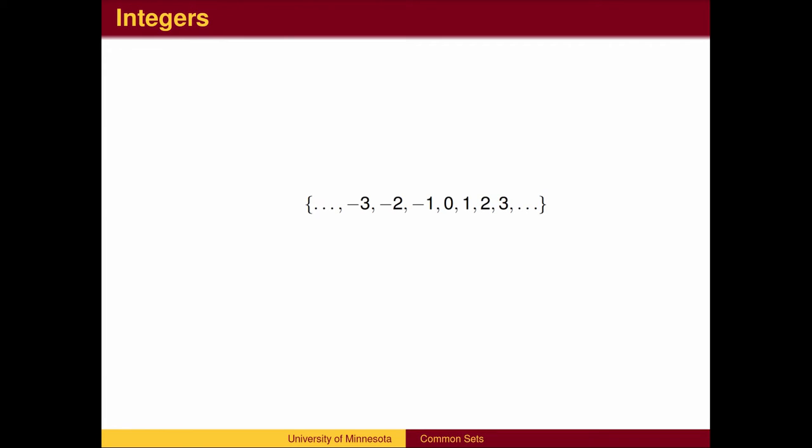This set is called the integers. It contains the natural numbers, and also includes their opposites, and contains 0. This solved our subtraction problem. 5 minus 8 is an integer. The set of integers is denoted by the letter Z.